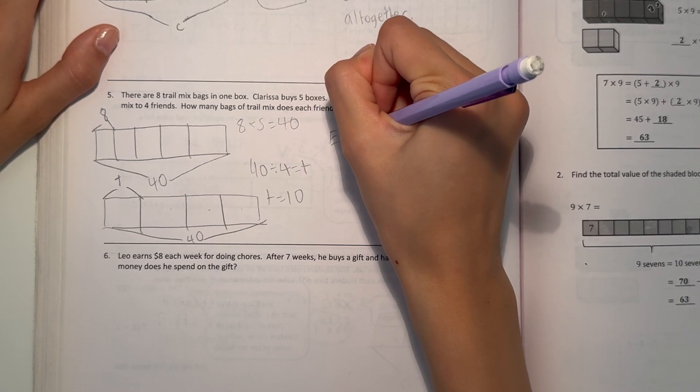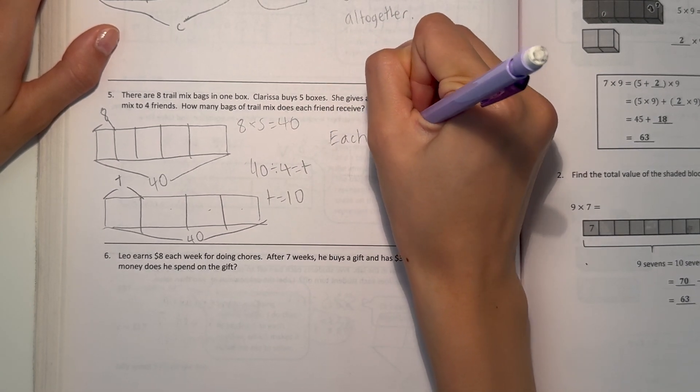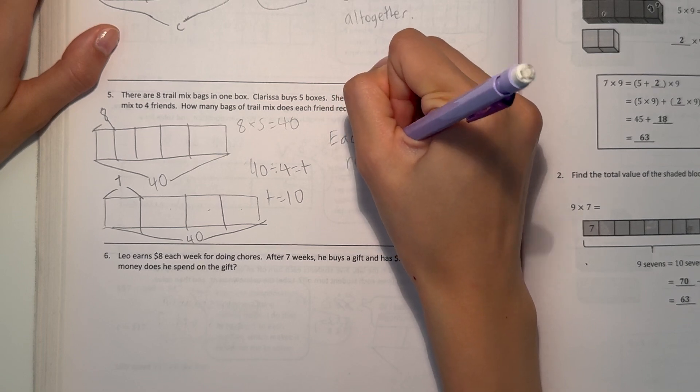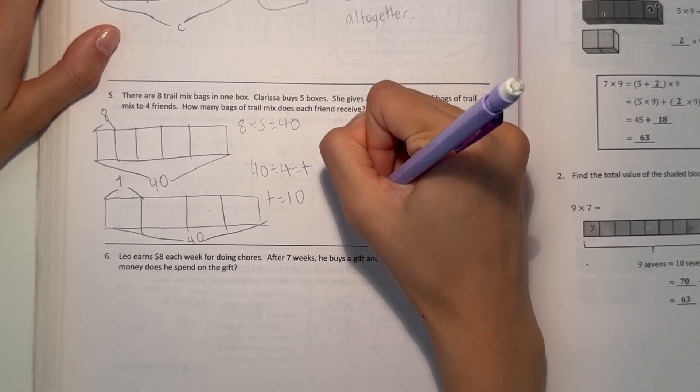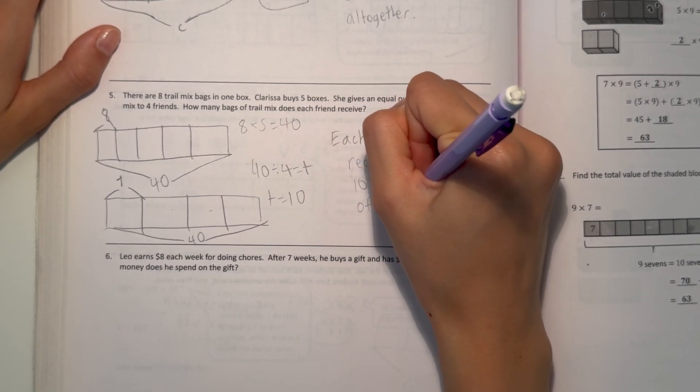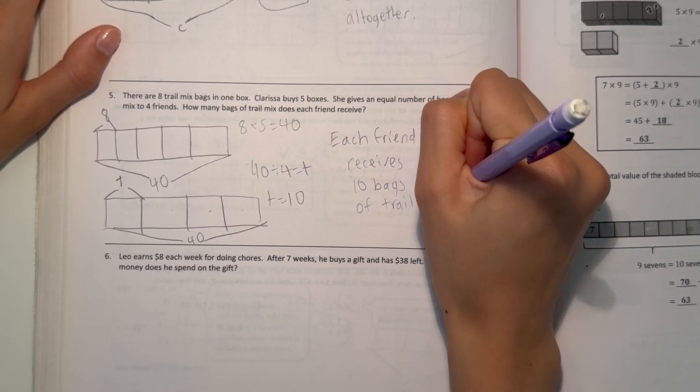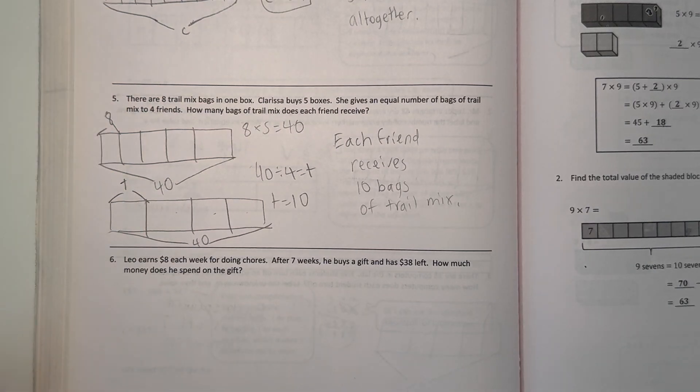Which means each friend receives 10 bags of trail mix. Alright, number 6.